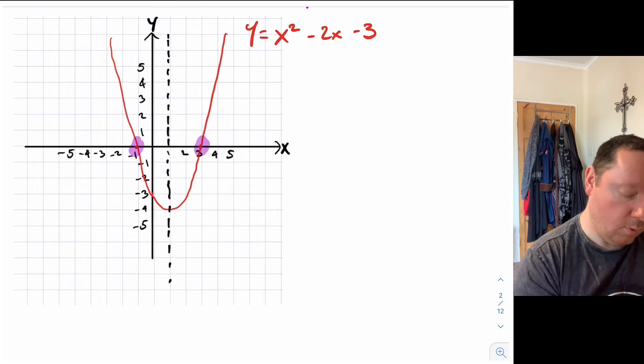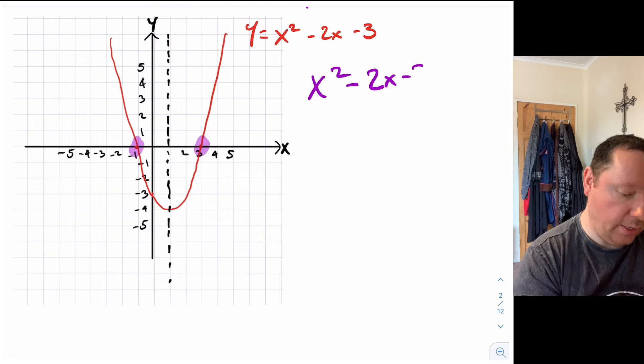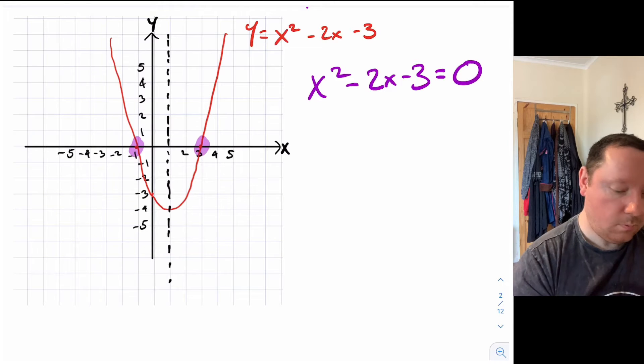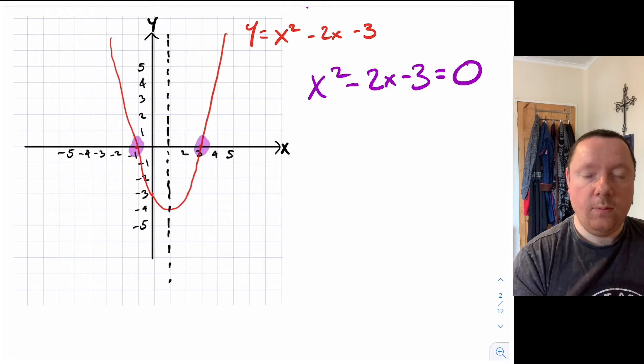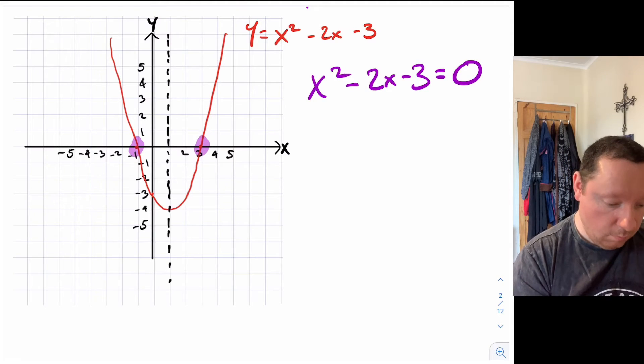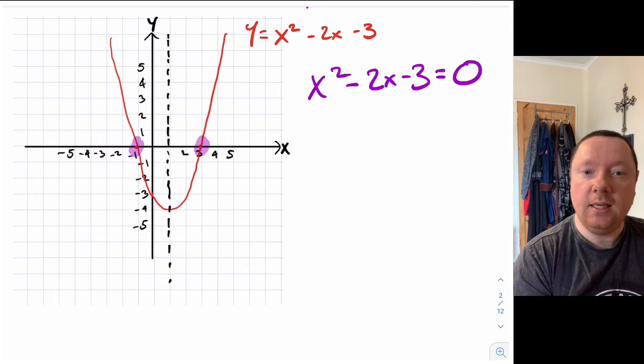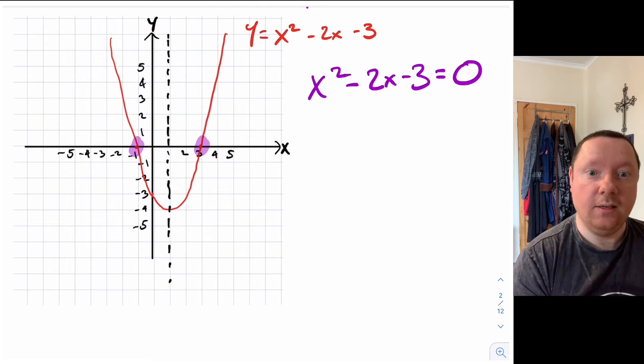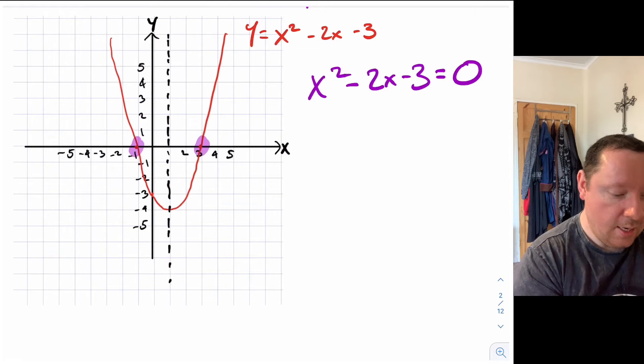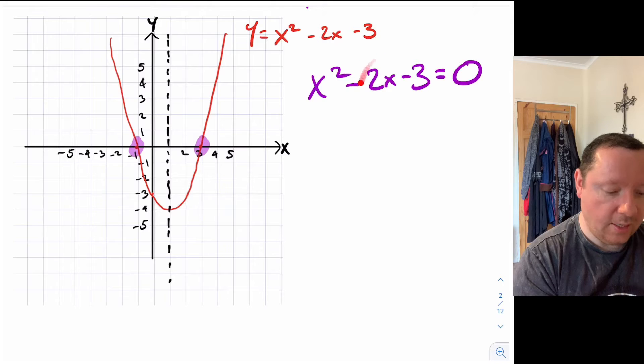So in other words we'll be saying we want to do x squared minus 2x minus 3 equals zero. Now when we did factorizing of quadratics and trinomials before we would be able to sometimes factorize these and in this case this one does factorize to get the answer. But not all trinomials can factorize. You can never find two numbers at times together to make this but add together to make this.